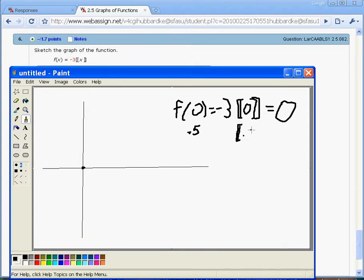the floor of 0.5 is still 0, so I get negative 3 times 0, which gives me 0. So at 0.5, I'm still at 0.